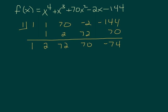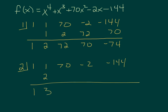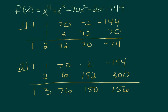We bring down and multiply, add, multiply, add, multiply, and add. All of these numbers are positive — they're all the same sign. So that tells us there is no zero that's going to be bigger than two. It doesn't tell us anything specific about two itself, just that if you divide by this number and get all positives, that becomes your upper boundary.